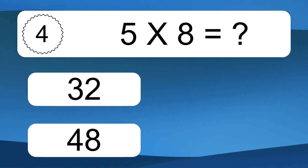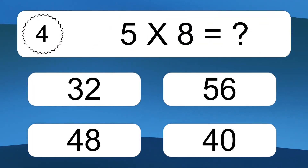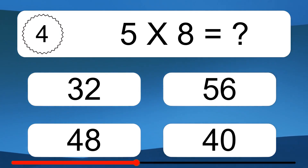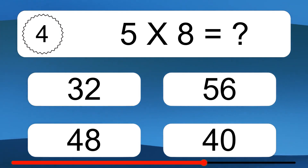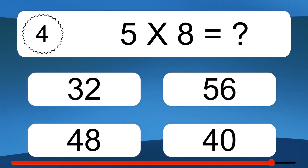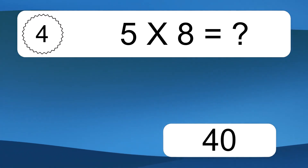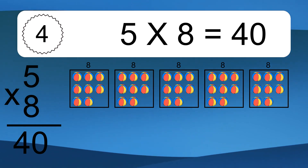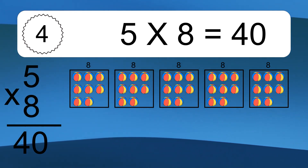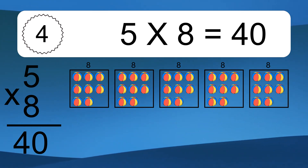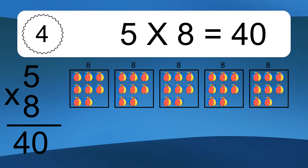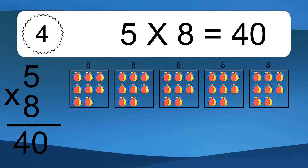5 times 8 equals what? 5 times 8 equals 40. We have 5 boxes, and each box has 8 colorful balls inside. If you count all the balls in all the boxes together, you will have 5 times 8 balls. This equals 40 balls.